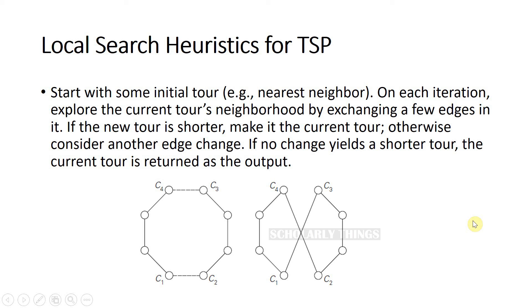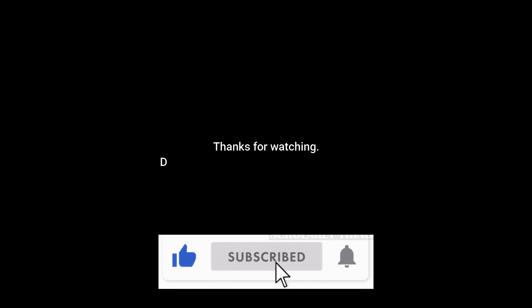Local search heuristic for TSP. Start with some initial tour, say nearest neighbor. On each iteration, explore the current tour's neighborhood by exchanging a few edges in it. Whichever one is shorter, make it the current tour; otherwise consider another edge. If there is no shorter tour, the current tour is returned as the output.